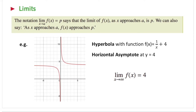It's important to understand the notation. We say that as x approaches a, f of x approaches p. So that's what this notation means. If you have the limit of f of x as x approaches a, then the value of the function approaches p.